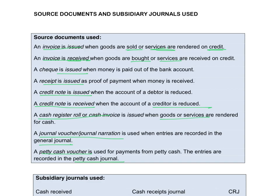What is very important is that you must look at whether a document is received or issued. An invoice issued is when you sell goods — you give it to your debtors. An invoice received is received from your creditors. Similarly, a credit note issued goes to debtors, and a credit note received comes from your creditors. So you issue an invoice and a credit note to your debtors, and you receive an invoice and a credit note from your creditors.